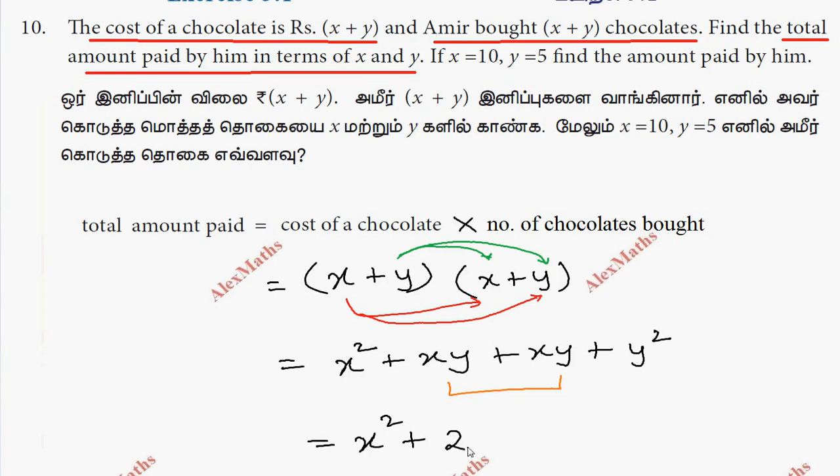Then we get the total amount paid in terms of x and y as x squared plus 2xy plus y squared. Now, if x is 10 and y is 5, find the amount paid by him.